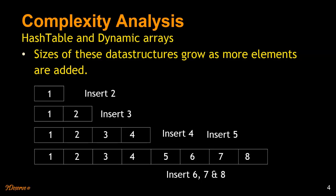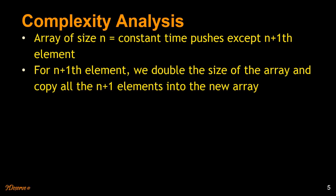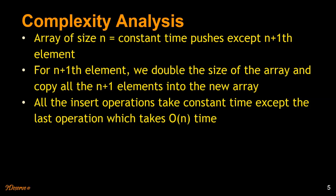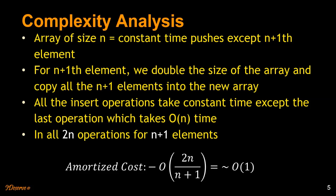If the array is of size n, we require constant time pushes up to size n. But to insert the (n+1)th element, we double the array size and copy all n+1 elements into the new array. So all insert operations take constant time except this last one which takes O(n). In total, 2n operations are required for n+1 elements, giving us amortized constant time. Amortized cost is the average time required for insertion of all elements — 2n divided by (n+1) is O(1).